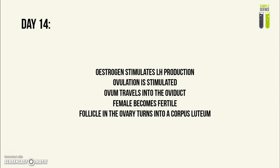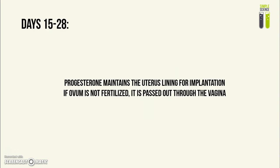The female becomes fertile and remains fertile for the next few days, and the follicle in the ovary becomes a structure called the corpus luteum, or the yellow body. From days 15 to 28, progesterone is secreted by the corpus luteum to maintain the uterus lining in case of implantation. If the ovum is not fertilized, it will be passed out through the vagina — keep in mind this is not menstruation itself, as it will typically not cause bleeding.